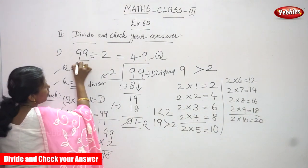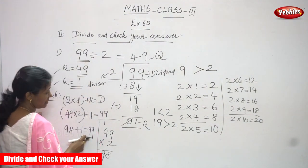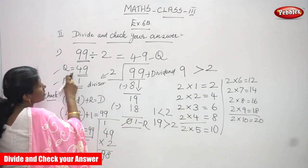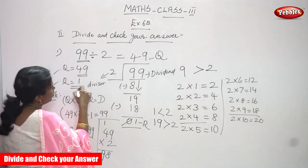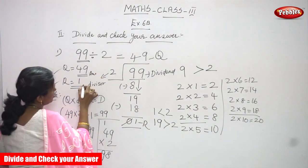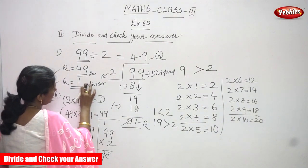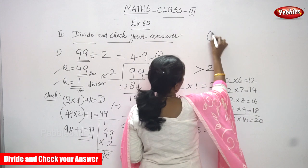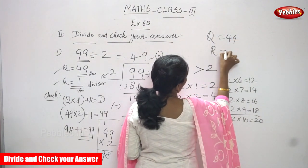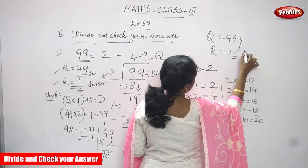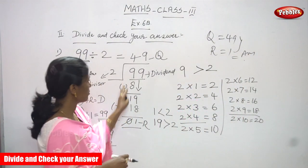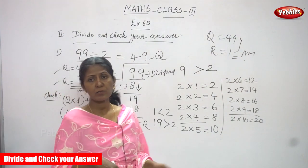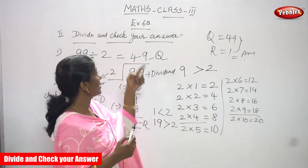You got 99, which is the dividend. If you get the dividend, then your quotient and remainder are also correct. So for this question, the quotient is 49 and the remainder is 1. This is the right answer. I've done both the division as well as the check method in the sum. I hope you understand how to divide and check your answer.